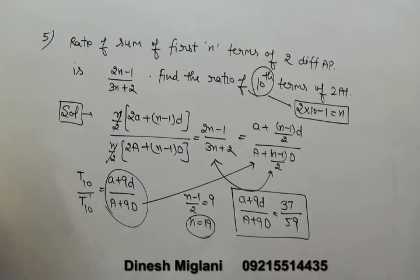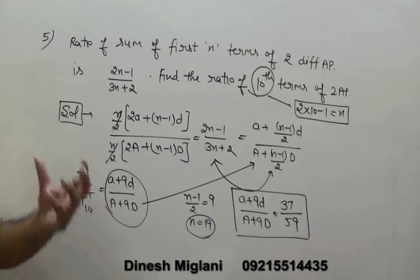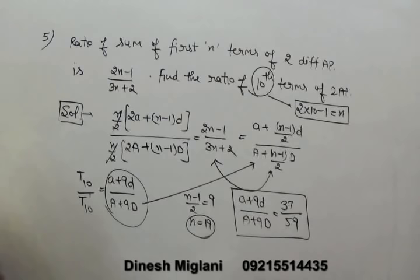We have now studied the different formulas for AP, GP, and HP. Let us now solve some questions to understand how to apply these concepts. We can find that the ratio of two different APs' 10th terms gives 37:59.